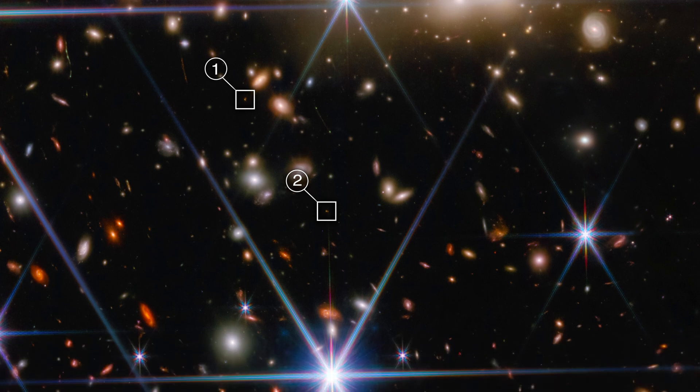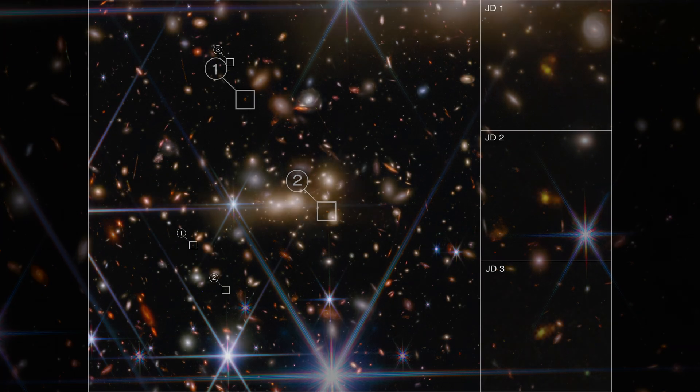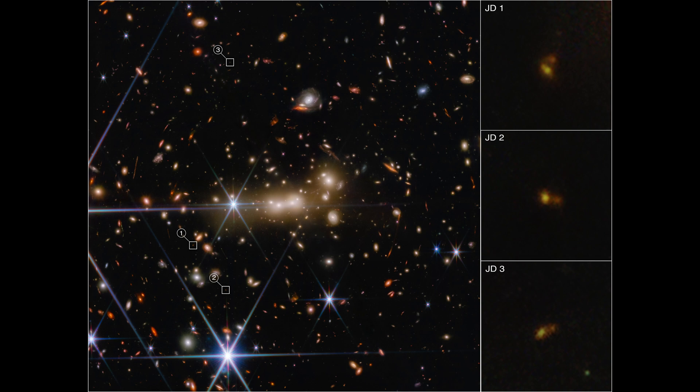Notice there are three boxes in this image highlighting a galaxy that has been lensed so much that its image appears three times. Each of these is an image of the exact same galaxy, one that is at a redshift of 11, meaning it existed within the first 400 million years after the Big Bang.